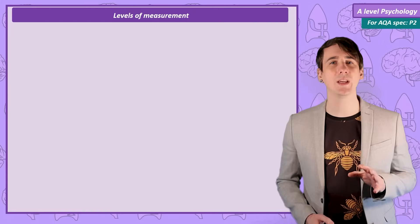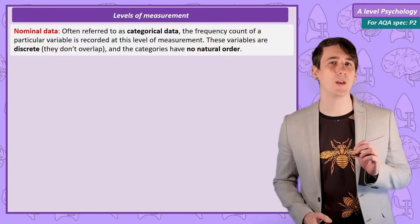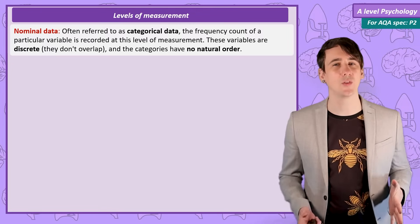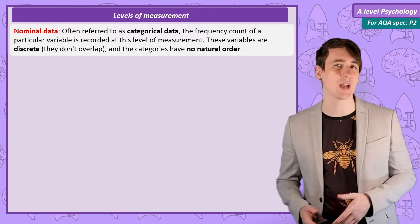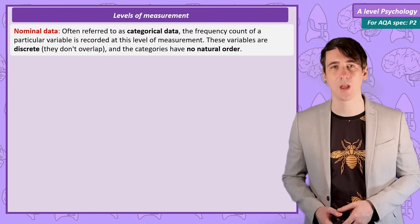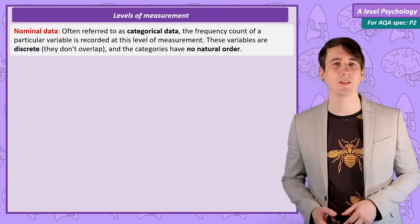Nominal data. Nominal data is the type of data we are using when the numbers refer to categories or more precisely to the number of items we have in each category, the frequency. Nominal data is also called categorical data.